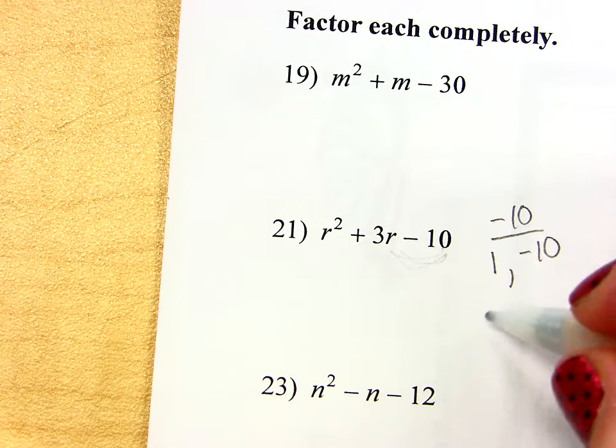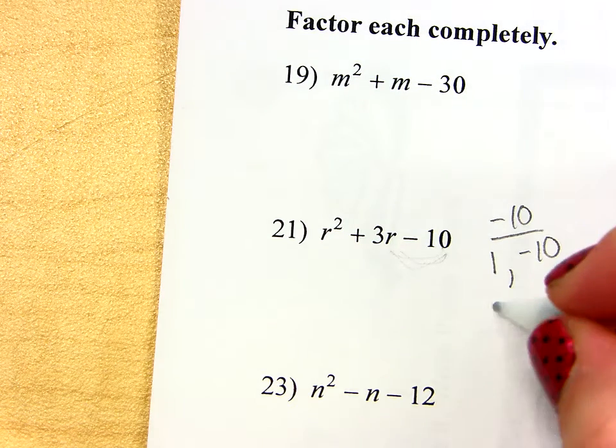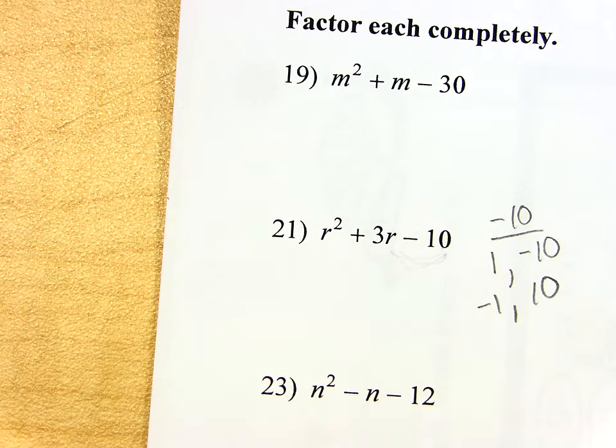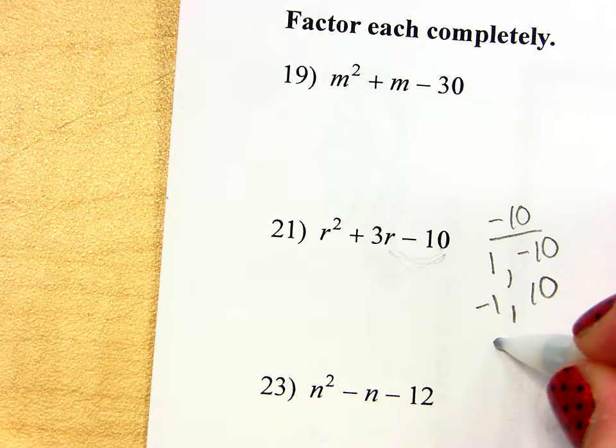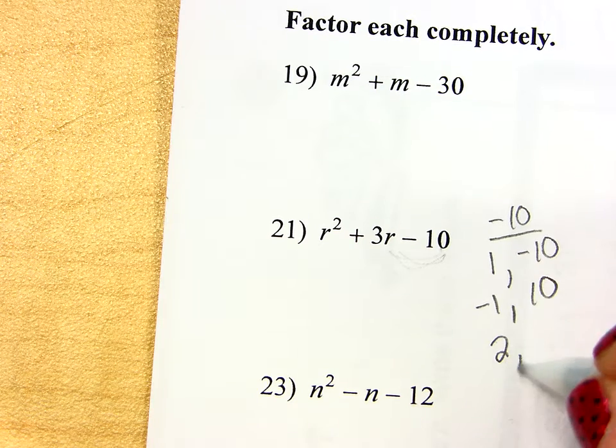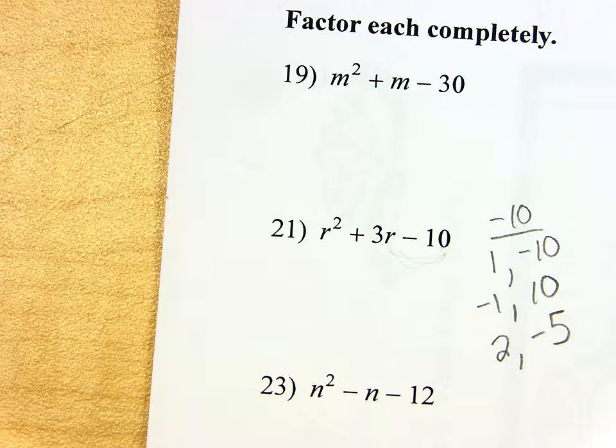I know, but we'll get there. Now, watch, though. I could put the negative on the 1, right? Negative 1 times 10 is still negative 10. It still doesn't add up to be 3, so it's not the right pair. So, I hear you guys saying 2 and 5. 2 times negative 5, that's negative 10. That's true. But does that add to be a positive 3?